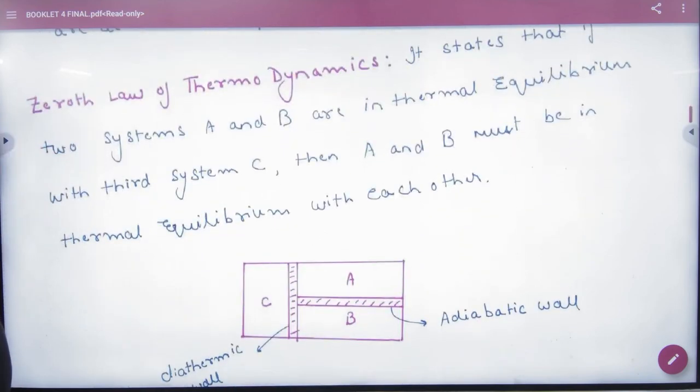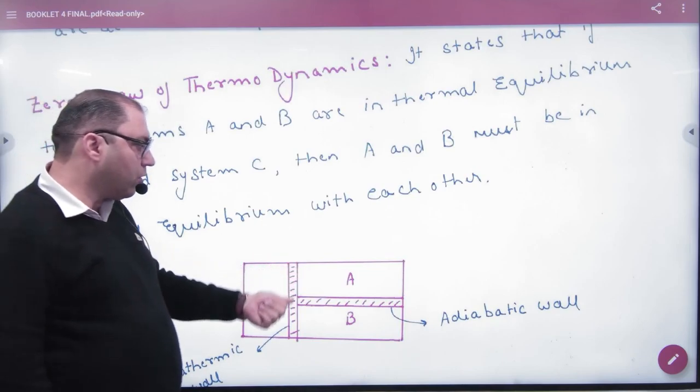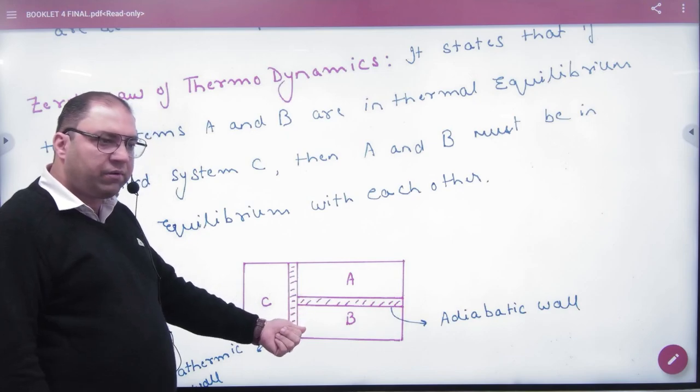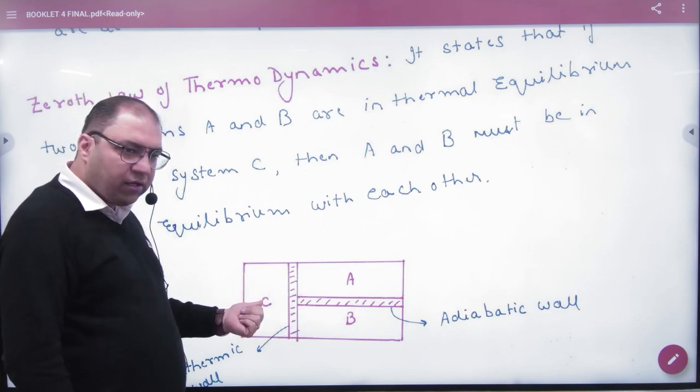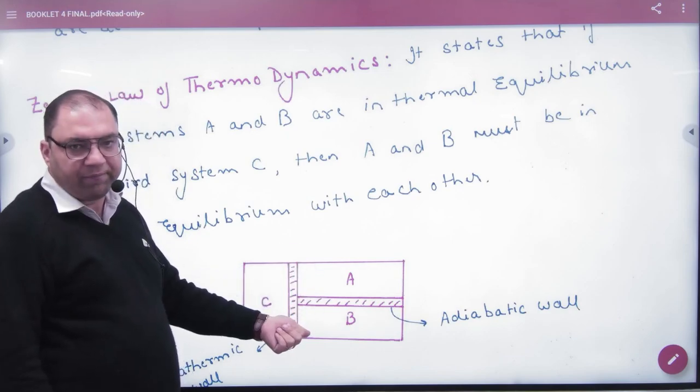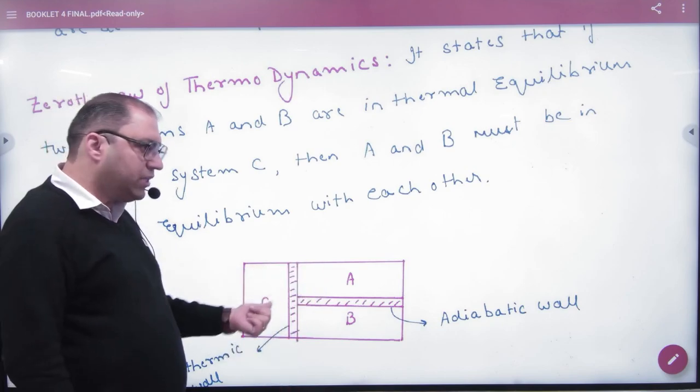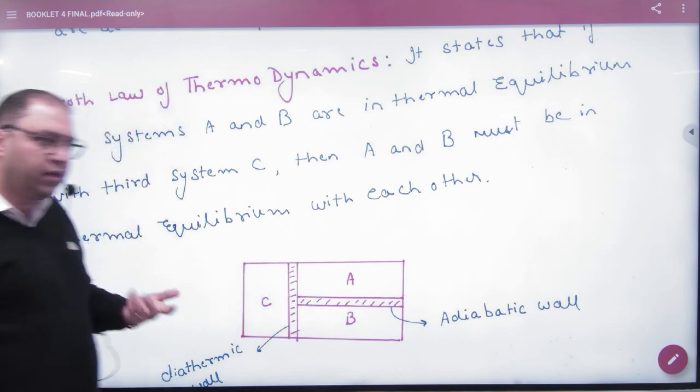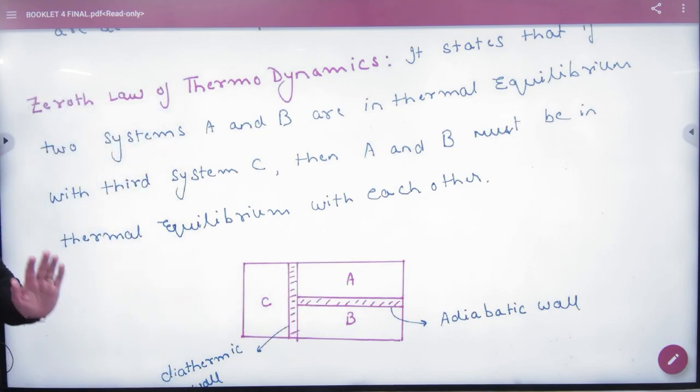The zeroth law of thermodynamics states that if A and C are in thermal equilibrium, and B and C are in thermal equilibrium, then A and B must also be in thermal equilibrium with each other.